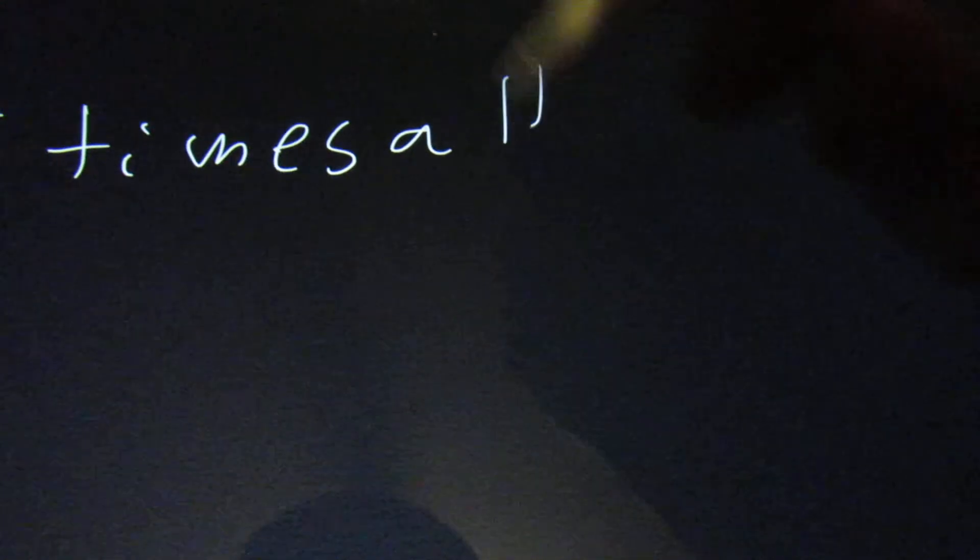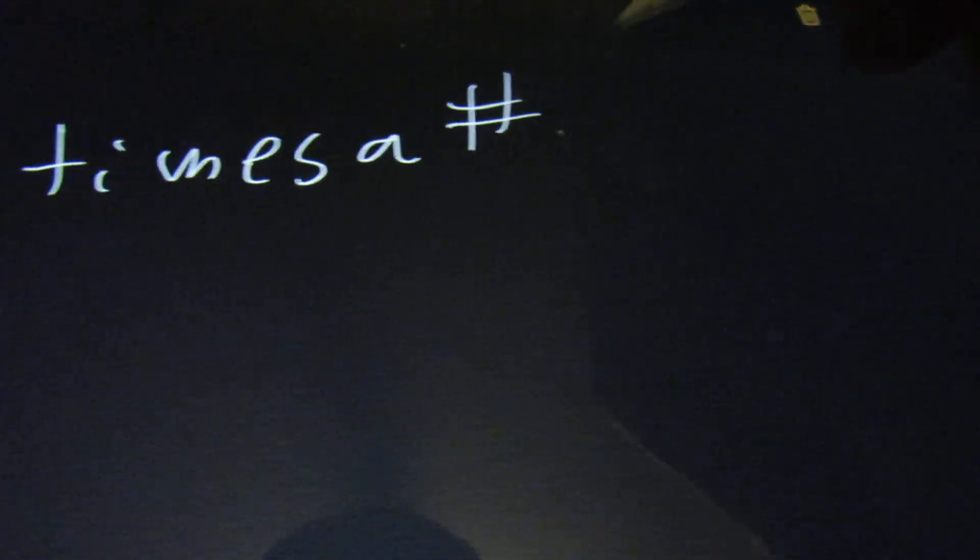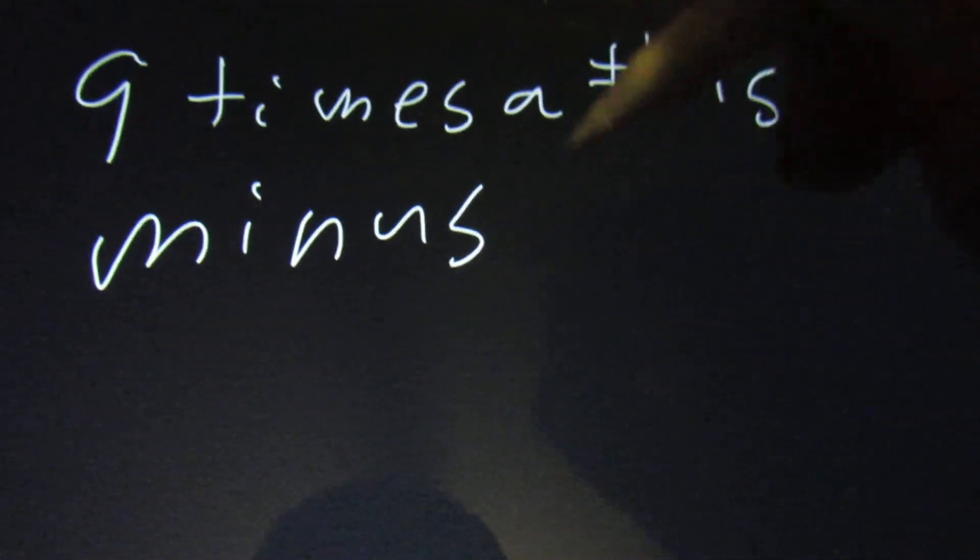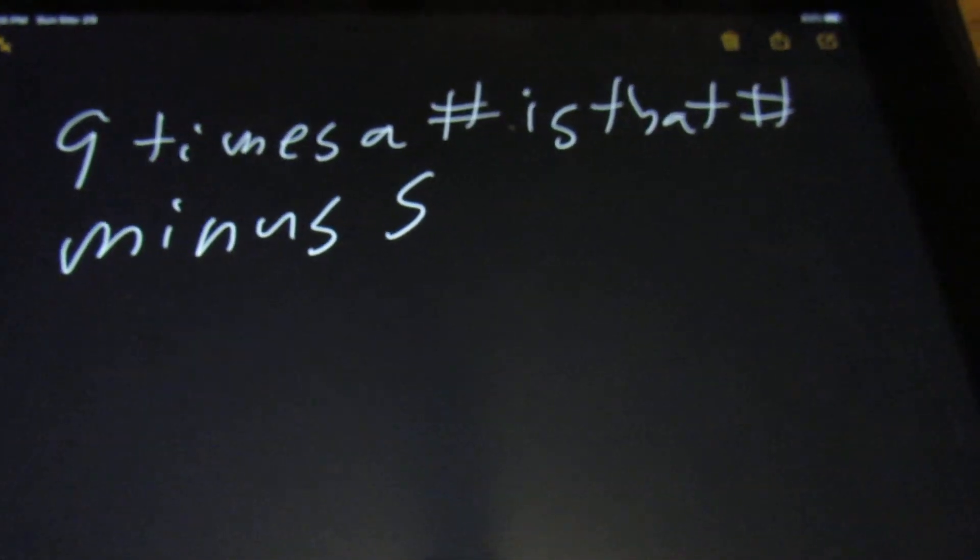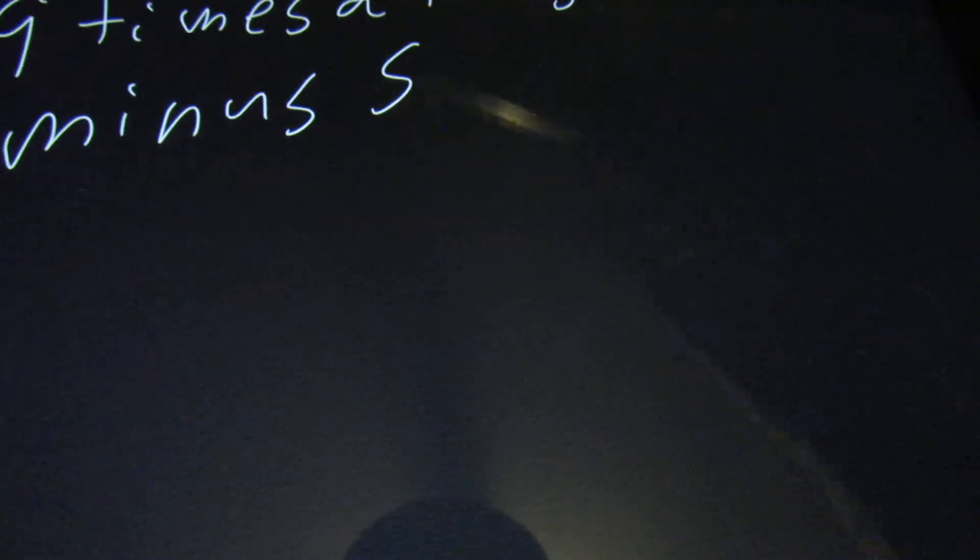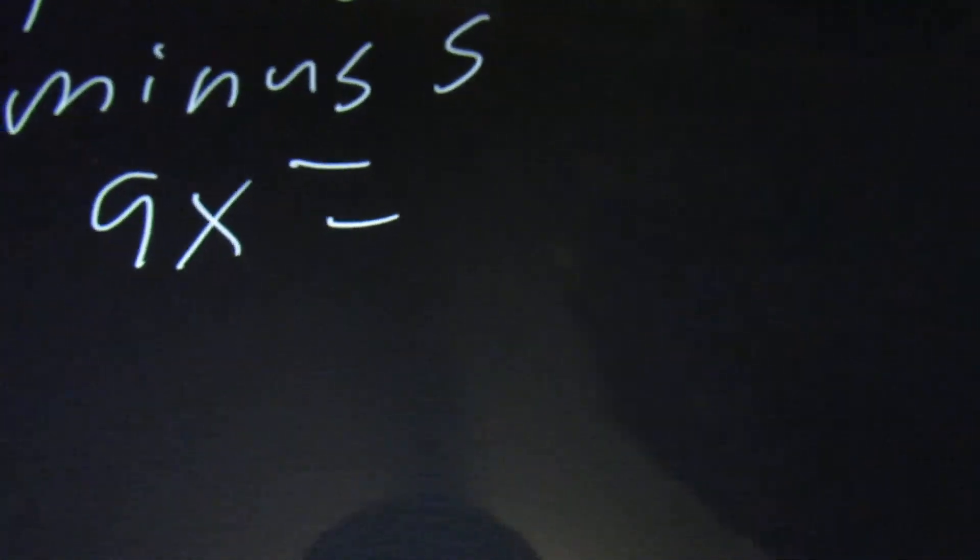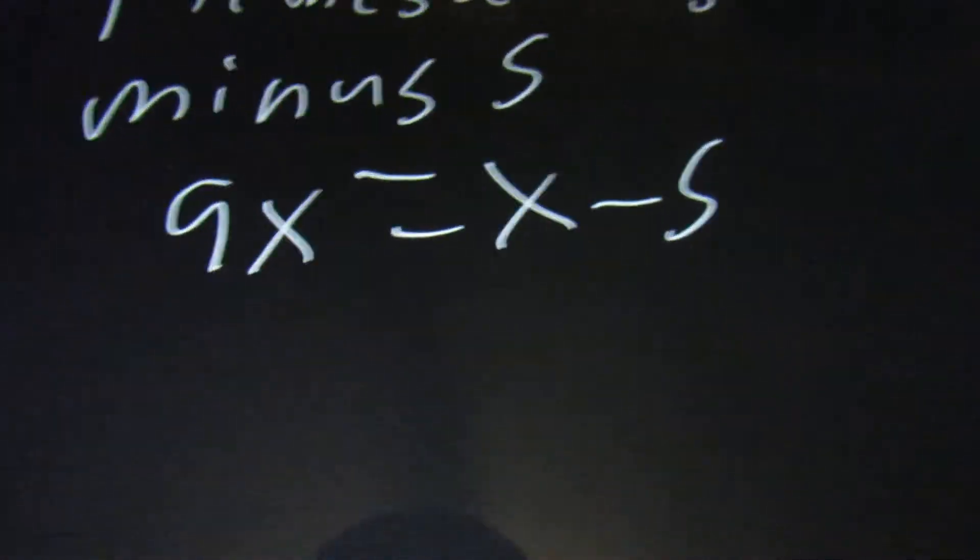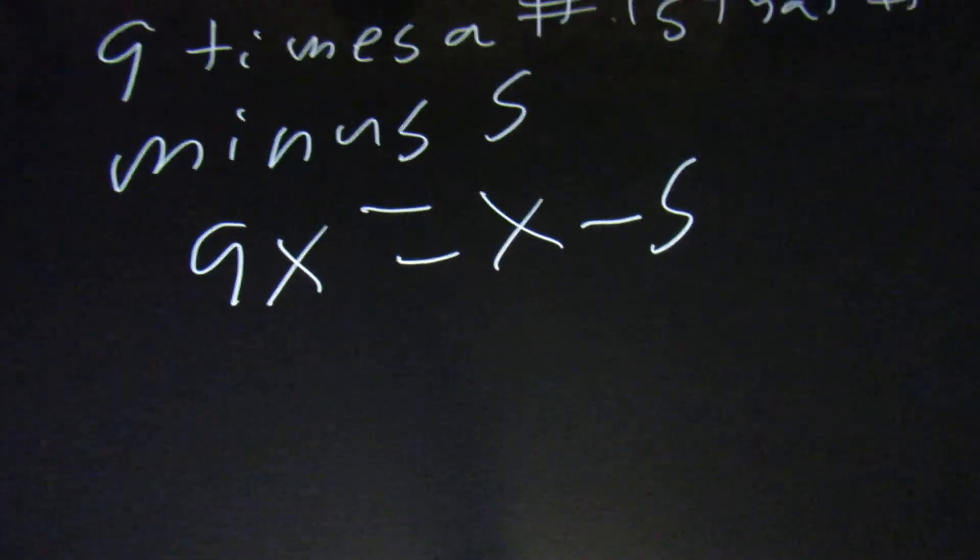Then you're going to have some word problems that all you have to do is turn it into a math problem. So it'll be something like 9 times a number is that number minus 5. It's going to tell you what letter to use. I'm going to use x for this, but 9 times a number just becomes 9x. Is always means equals. And then that number, which again is just going to be x, and then minus 5. And that's all it's asking you to do here. It's not telling you to solve for it.